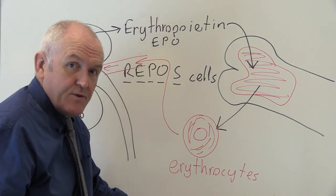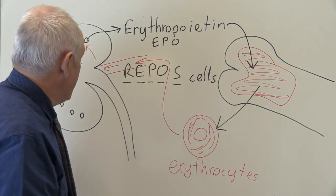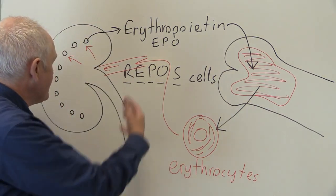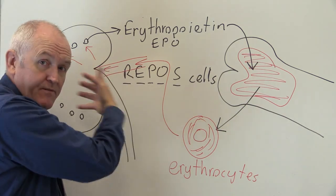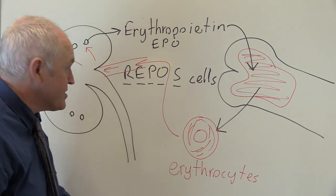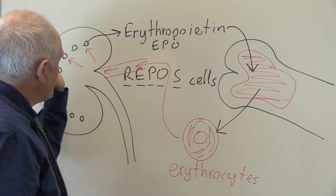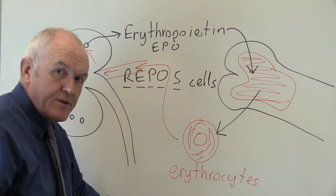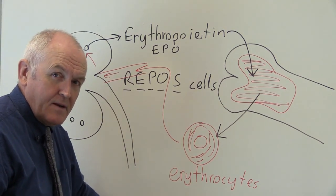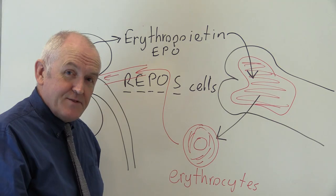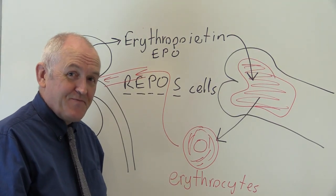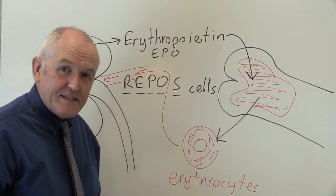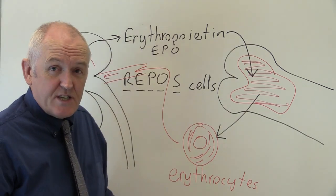And this is very useful for patients who have renal failure. So in renal failure, the blood supply or the blood flow through the kidney is often reduced, and these patients can't produce their own erythropoietin. Now when I was young we used to give these patients blood transfusions, but then when erythropoietin became available, it's so much easier. You just give them an injection of EPO.